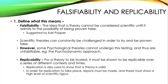Moving on to replicability: for a theory to be trusted it must be shown to be replicable over a series of different contexts and times. Replication is also key because it's used to show that a theory is valid. In order for replication to take place, reports must be made, and it's key that these reports show a high level of scientific rigour. If scientific rigour isn't there and the process isn't completely documented, a replication will not be able to take place, and it's this replication that is needed to show that something is falsifiable. You might want to give examples of psychological theories that are both falsifiable and replicable, and ones that aren't.